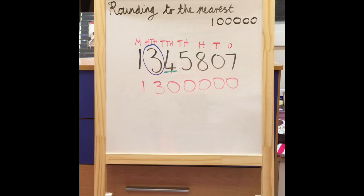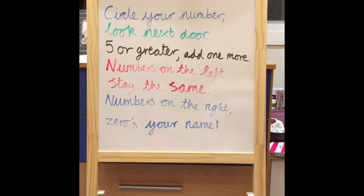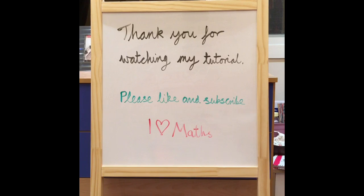Exactly the same principle and technique would apply if you're rounding to a million. This rhyme can be used to round any number to the nearest ten, a hundred, a thousand, a hundred thousand, a million, even ten million and beyond. Remember: if you round to the nearest ten, circle the tens column; nearest hundred, circle the hundreds column; nearest thousand, circle the thousands column, and so on. Look next door to the digit on the right — if it's five or greater, add one more to the digit you've circled. If not, keep it the same. Numbers on the left stay the same, and numbers on the right change to zeros. Thank you for watching my tutorial — please like and subscribe.